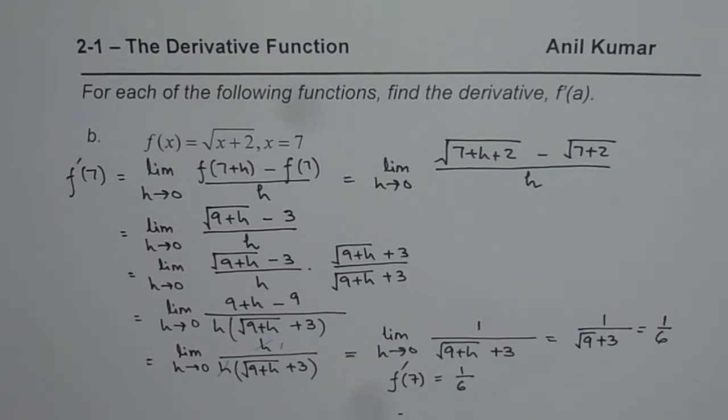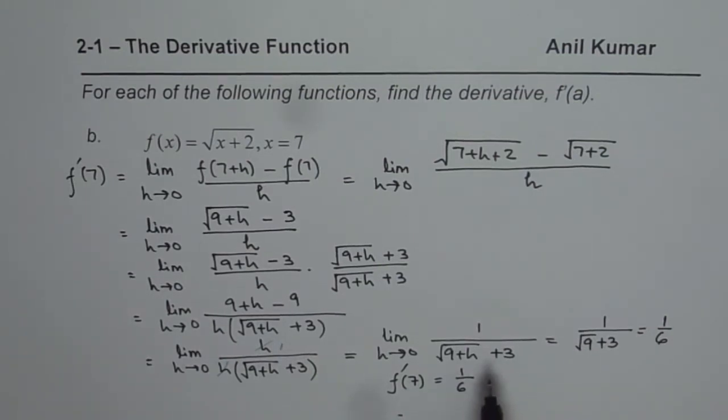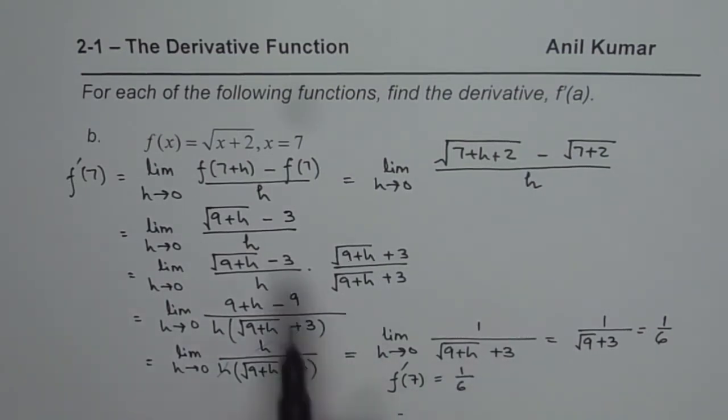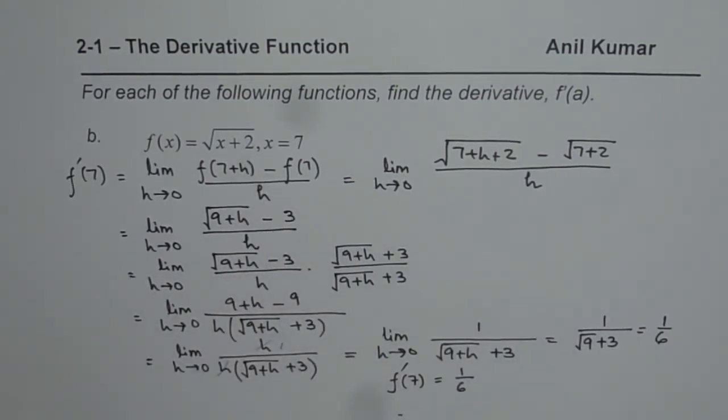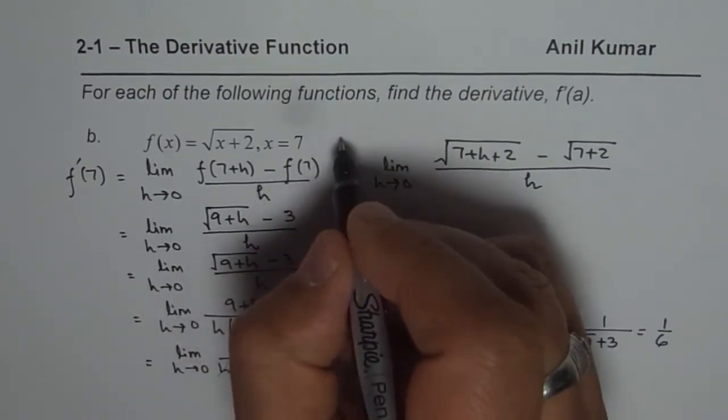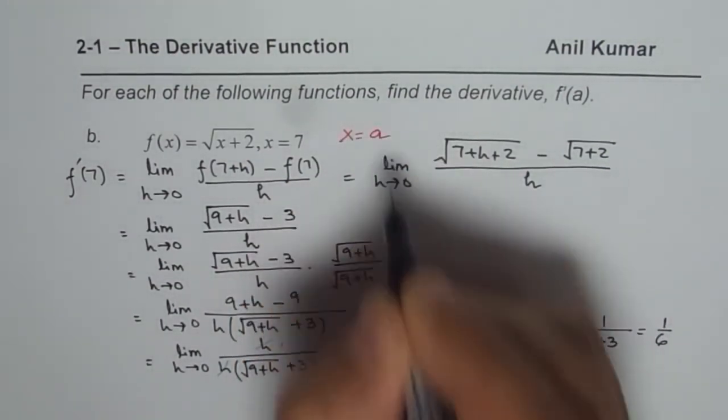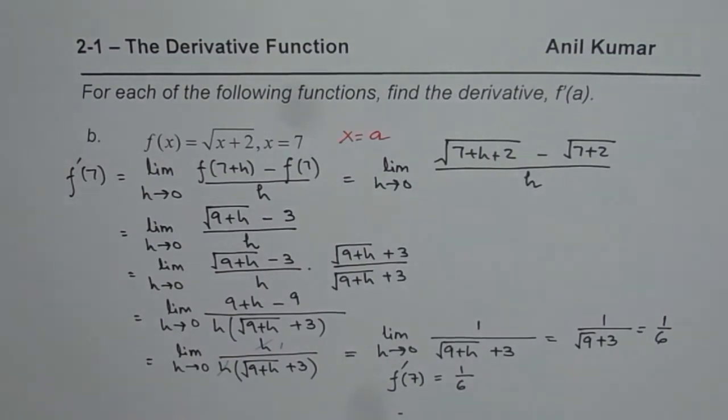So that is how we are going to solve this question. I hope the steps are absolutely clear. As an exercise, what you can do is find a general formula. That means change the question a bit. So you say at x equals any point A, find a general formula. And then you can substitute 7 and find, check your answer, do you get the same answer or not? That should be good for practice. Thank you and all the best.